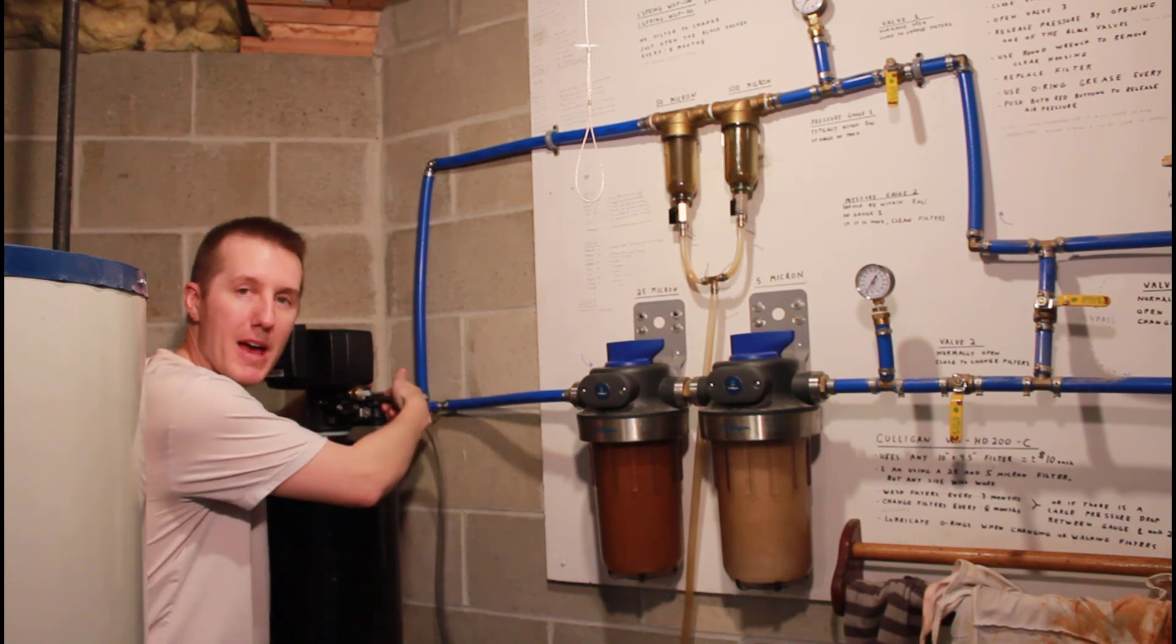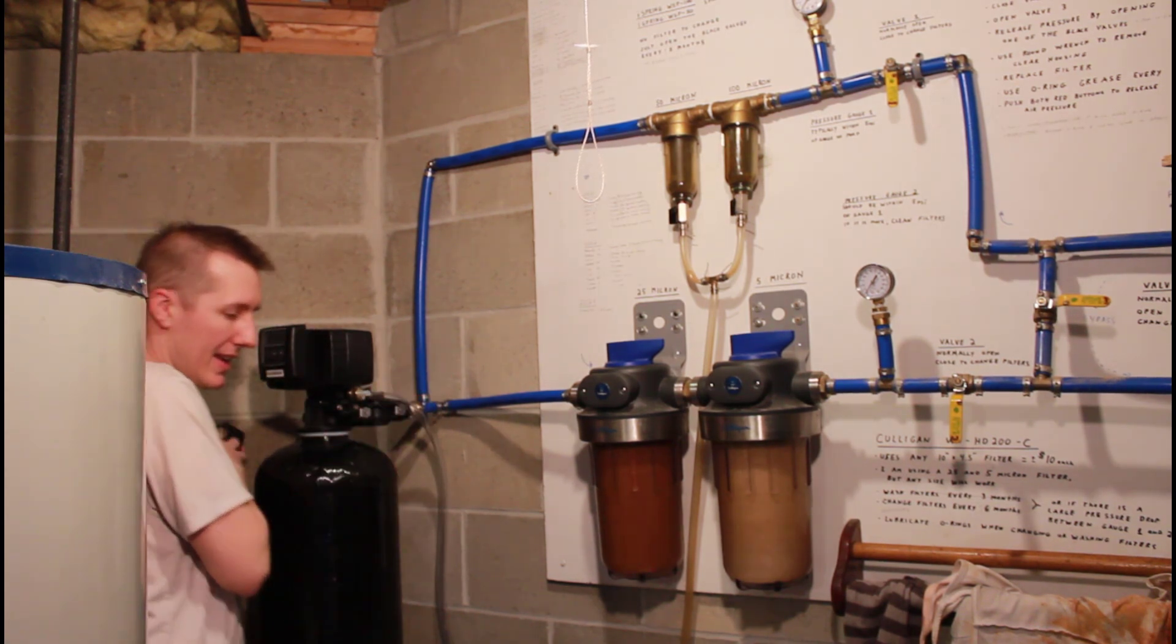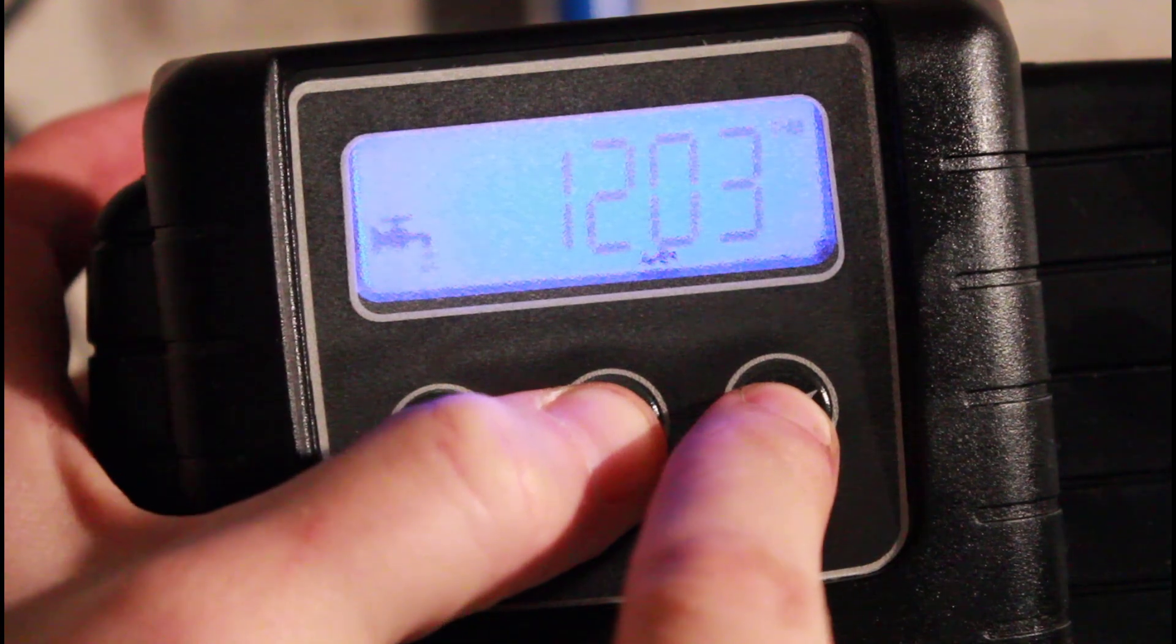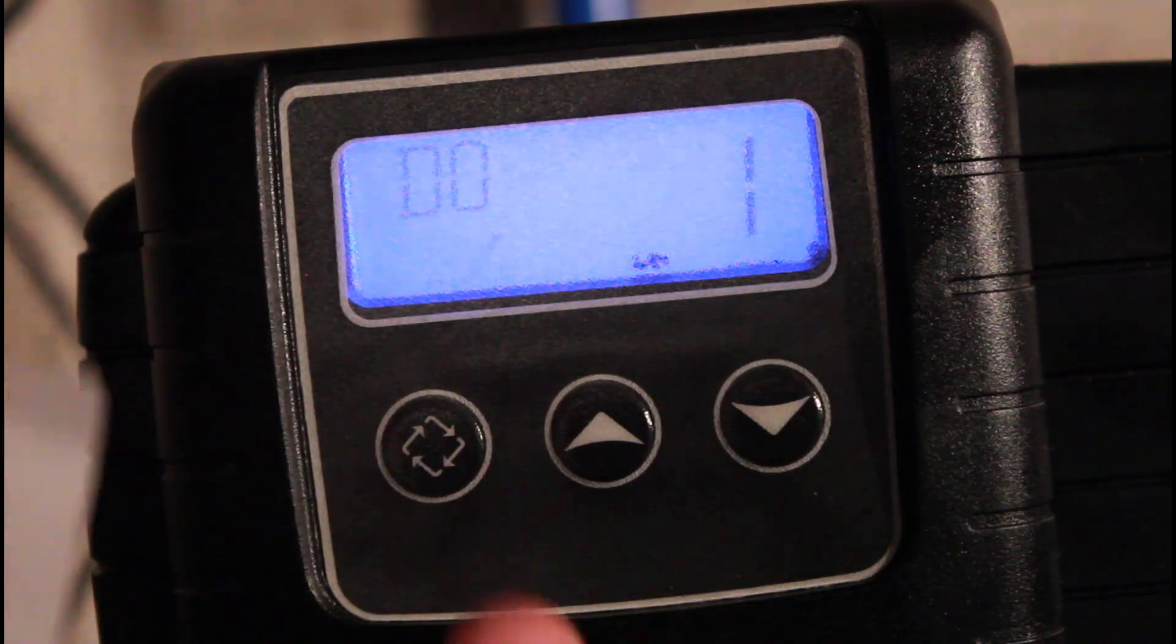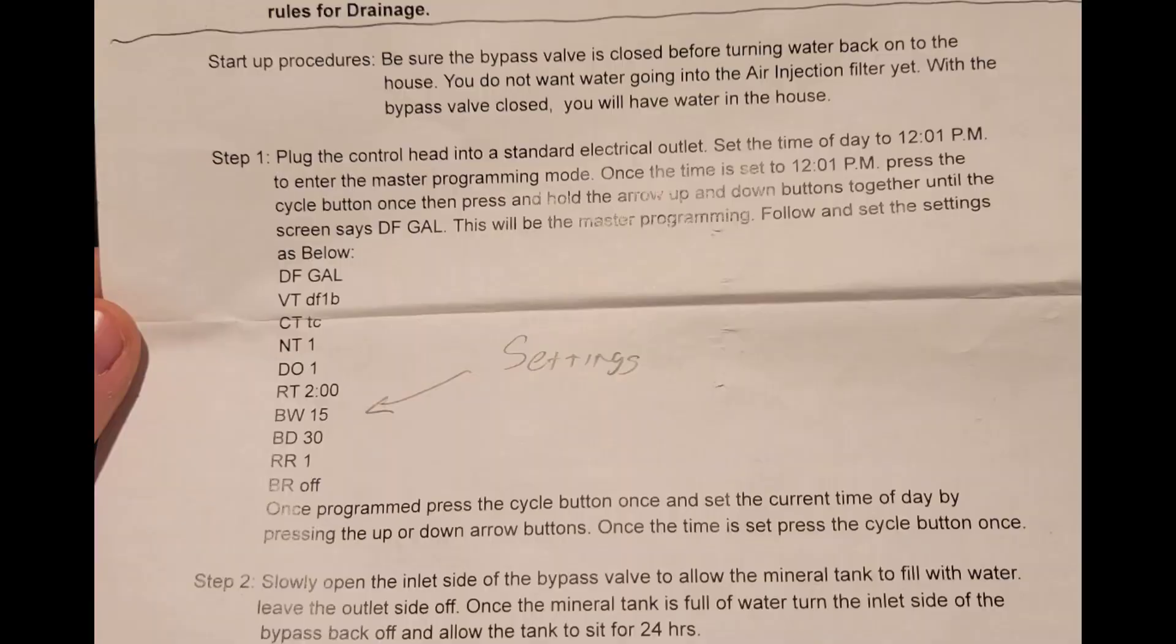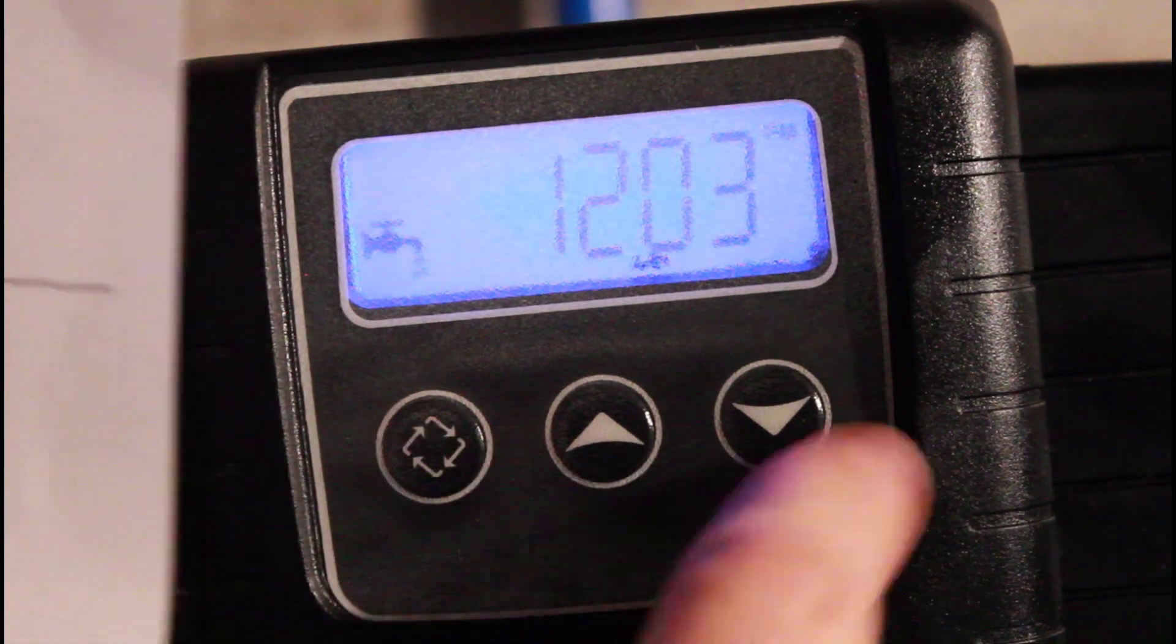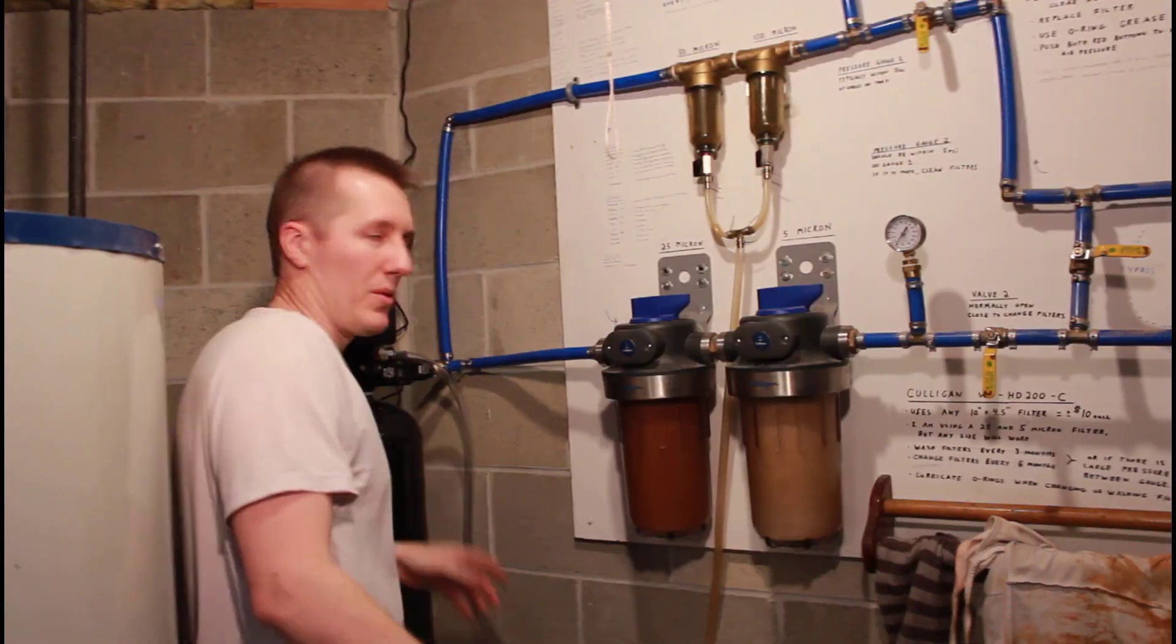Don't turn the water on yet and make sure the bypasses are shut. So there's no water going to get to this system. Plug it in. So it starts with time. You hold up and down together. And it will go through all of these different settings. And I just, according to the sheet, set it and then press the setting. RT two o'clock. So I just go through and set these settings and then I can set the time.